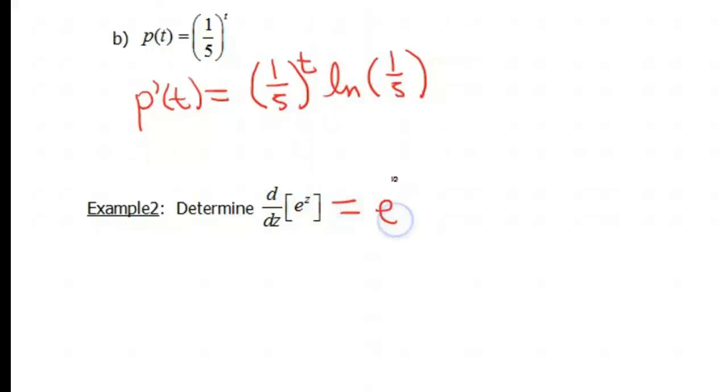So that's gonna be e to the z. That doesn't change. And then that's gonna be times the natural log of e. Now, this one's a little bit special because remember, the natural log and the e function, they're inverses, so they're gonna cancel. So in this case, the derivative of e to the z is just e to the z.